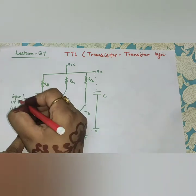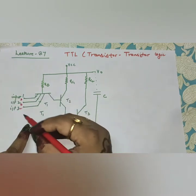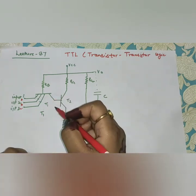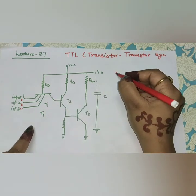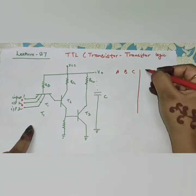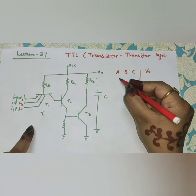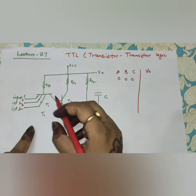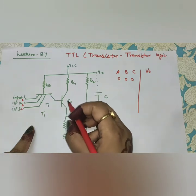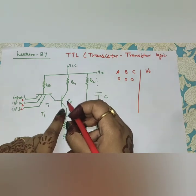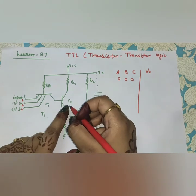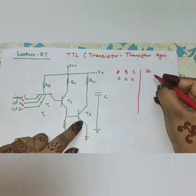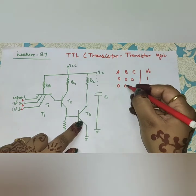Basically, I am talking about a three-input transistor here. If you want more inputs — four input, five input — you can increase the emitter inputs. Let's suppose there are three inputs A, B, C and the output is V0. If you give 000 here, T2 will be cut-off and T3 will also be cut-off. The output is directly connected to VCC, so the output will be one.